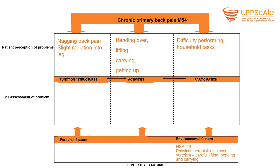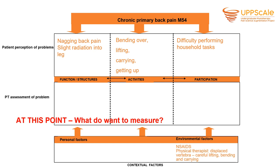We've started to fill in the health profile. We now have filled in chronic low back pain. She has nagging back pain, slightly radiating into her leg. She has difficulty bending over, lifting, carrying, getting up and difficulty performing household tasks. In her environmental factors, she's getting NSAIDs from her primary care physician and a physical therapist told her she has a displaced vertebra. So at this point, what do you want to measure? Think about which aspects of her you'd like to measure and which tools you would use.